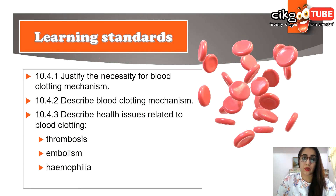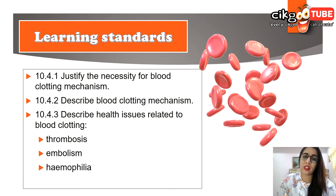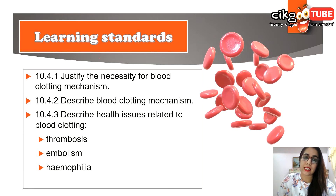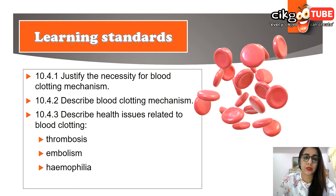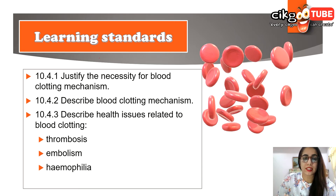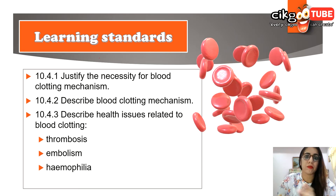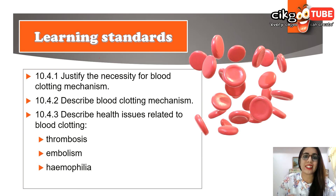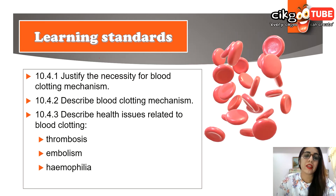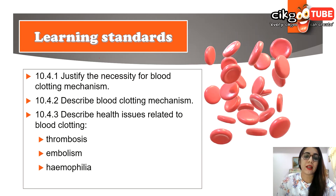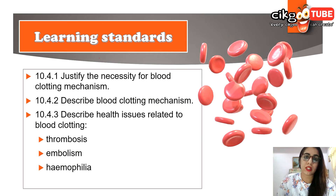Before we begin, let's look at the learning standard. In this subtopic you should be able to justify the necessity for the blood clotting mechanism — meaning why blood clotting is important — describe the blood clotting mechanism, and describe health issues related to blood clotting, which are thrombosis, embolism, and hemophilia.